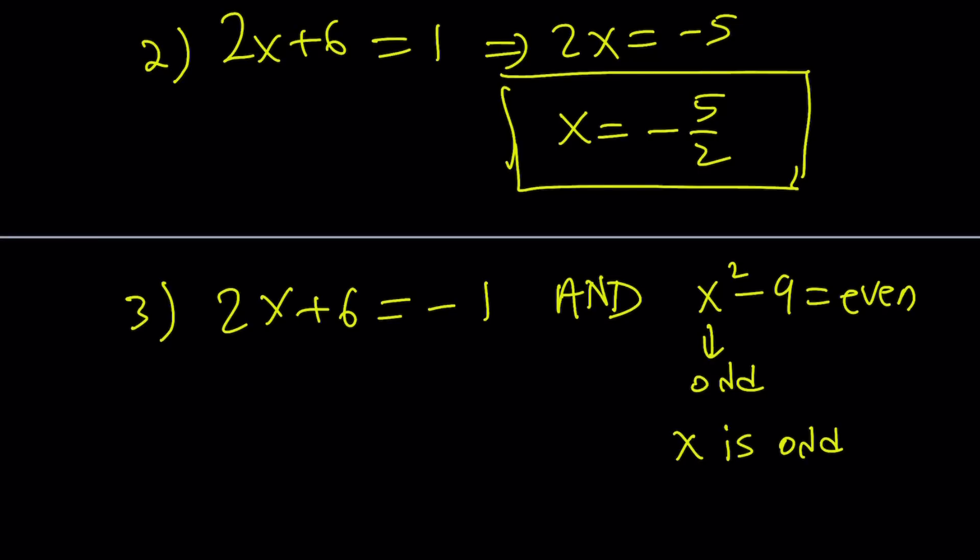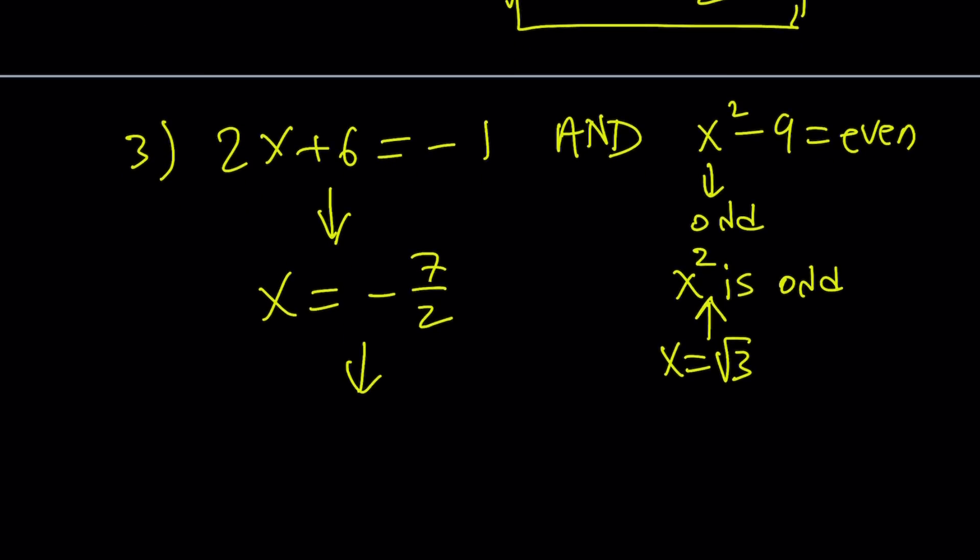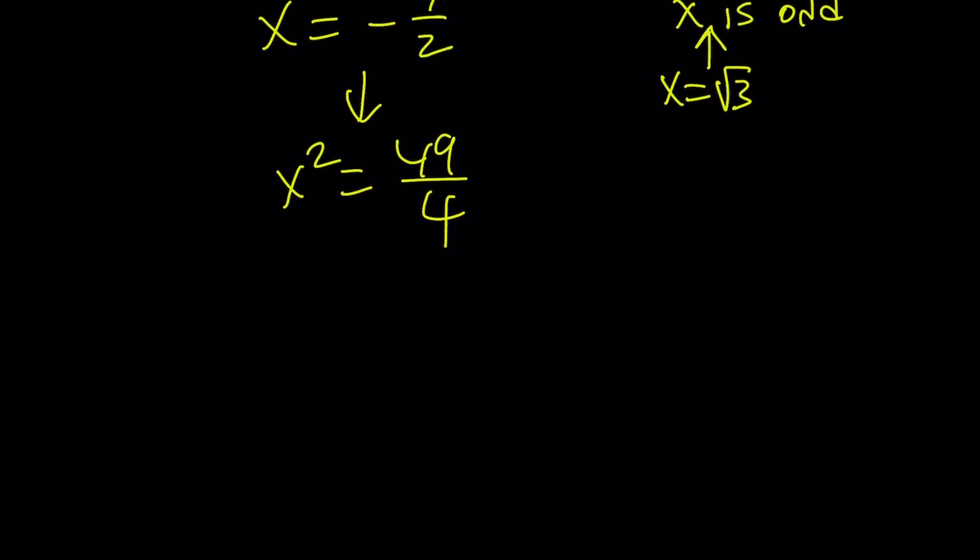So we basically want x squared to be odd. The reason why I make a distinction is because if x happens to be square root of 3, it is going to work because square root of 3 squared is odd, but square root of 3 isn't because it's not even an integer. But when we solve for the equation, we get x equals negative 7 halves. And if you square this number, you're going to get x squared equals 49 over 4. And do you think that is an odd number? So that's something interesting to think about. So let's go ahead and plug it in because this is a really interesting case.